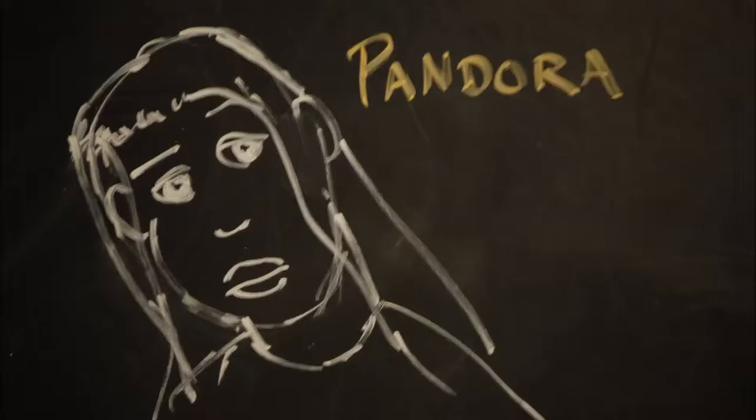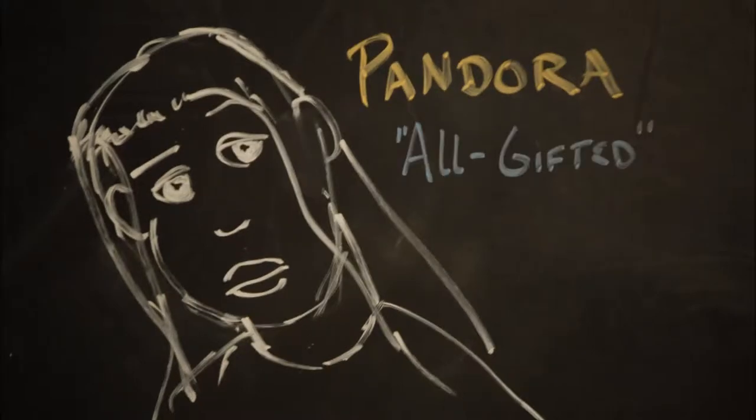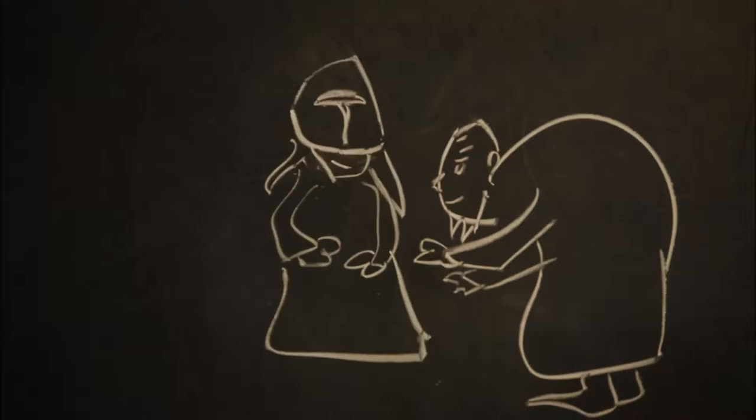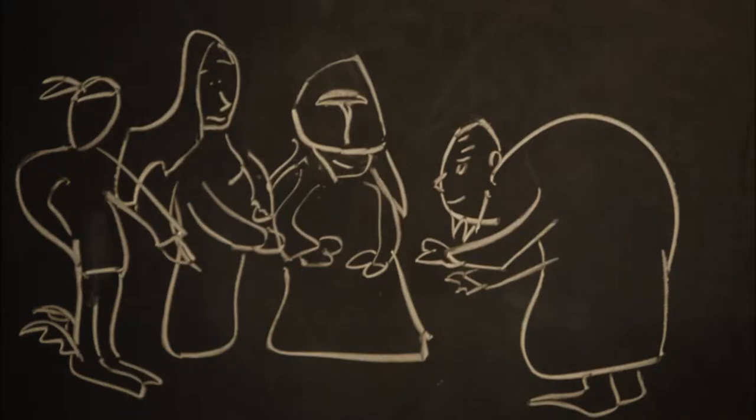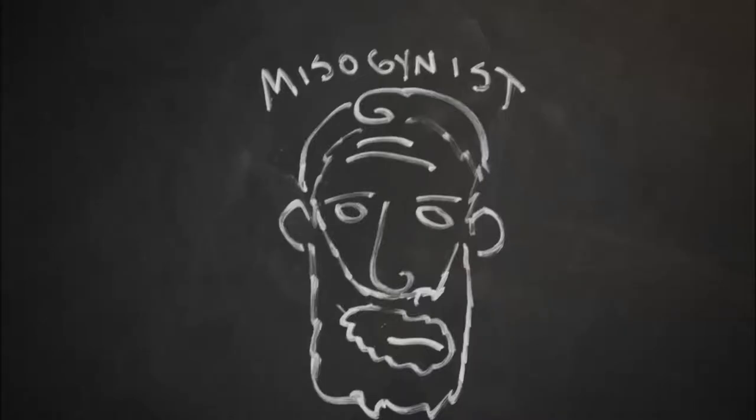This woman was called Pandora, or All Gifted, because each god and goddess gave her a different trait. Hephaestus gave her a pleasing form, Athena gave her the skill of her hands, Aphrodite gave her grace and longing, and Hermes gave her a deceitful character and the ability to lie. I do not think Hesiod was a happy gentleman.